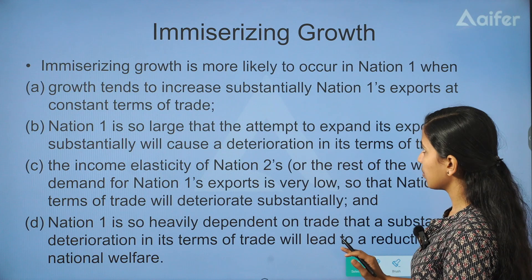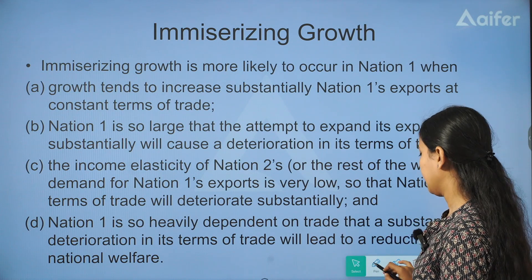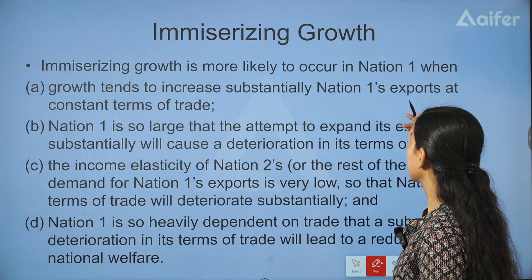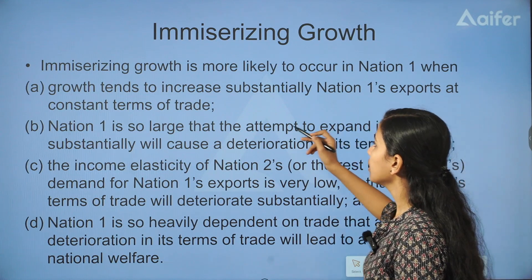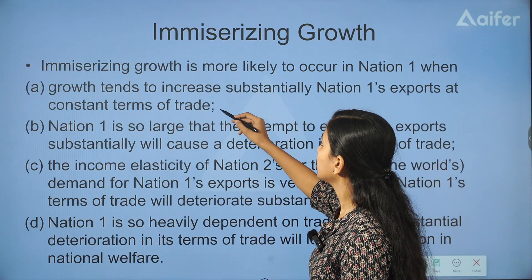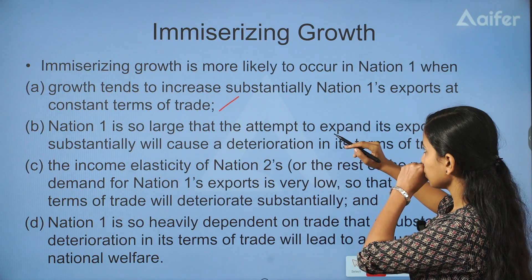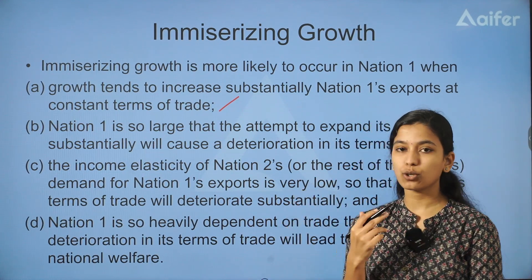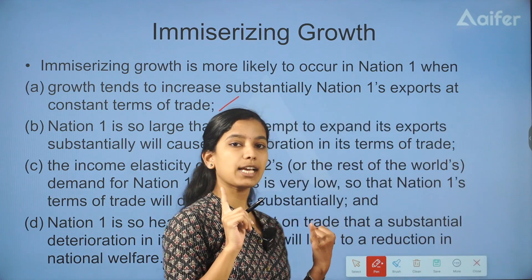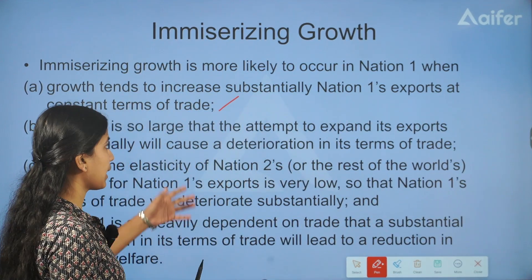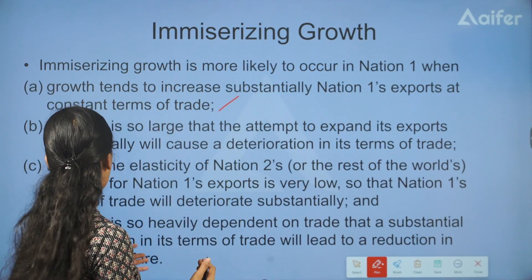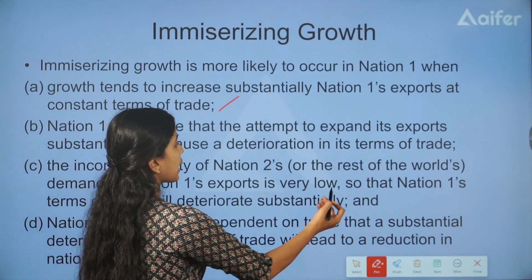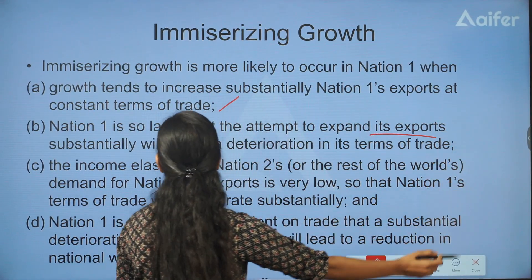Immiserizing growth occurs because of the following reasons: the growth tends to increase substantially Nation 1's exports at constant terms of trade. That is, this growth increases the exports — exports expand large.